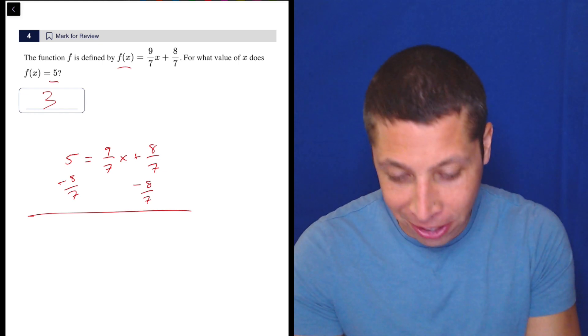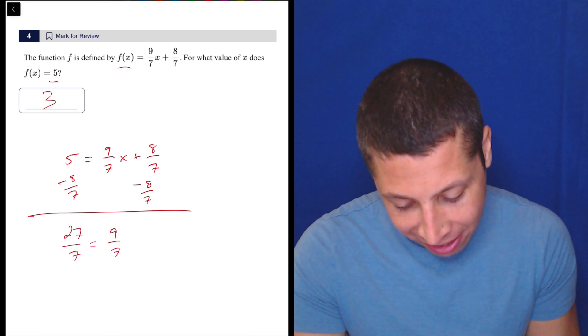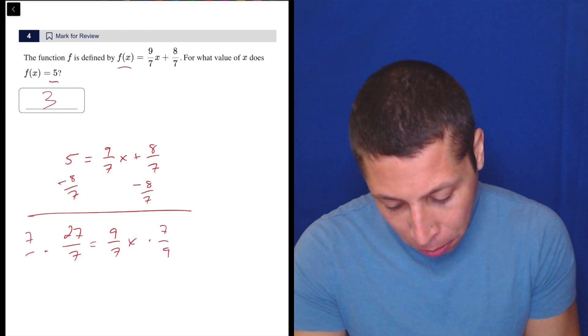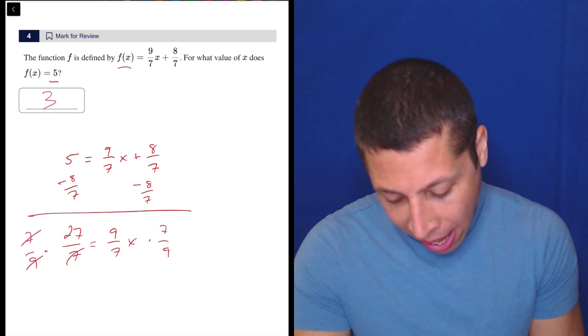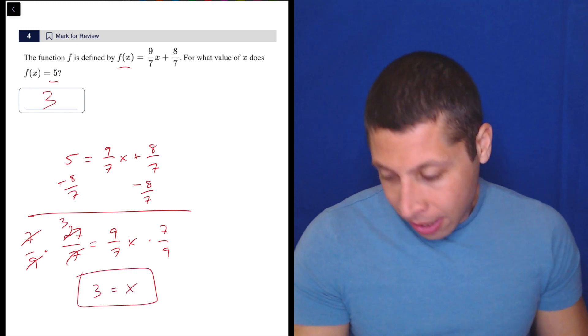Let's do this. I can turn it into a regular fraction. 27/7 equals 9/7x. Yeah, I should have multiplied by 7 for sure. Multiply by 7/9, gets rid of that. This reduces to 3. So there you go.